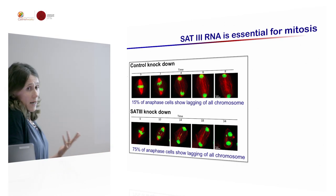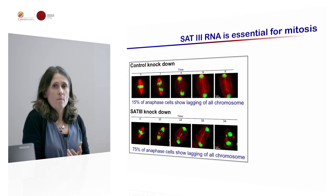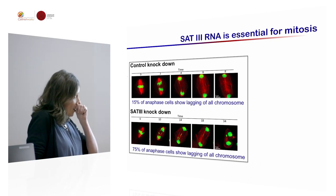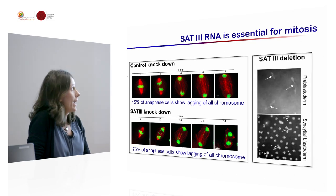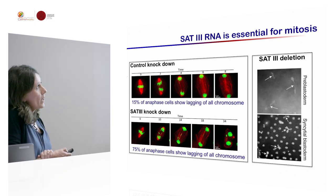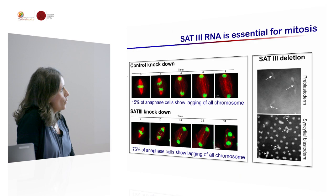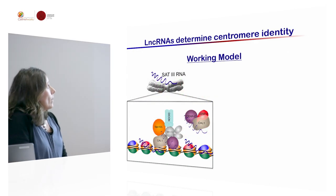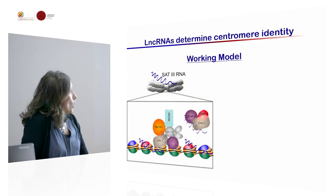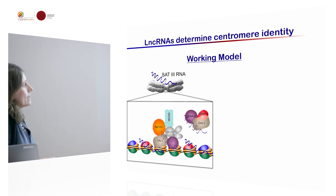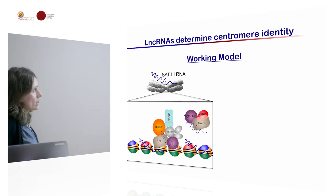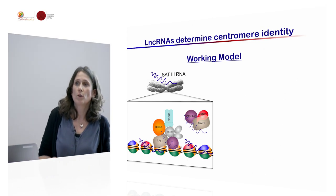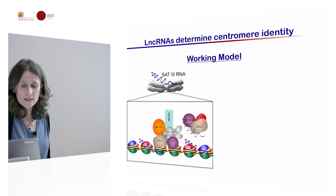If you deplete them by LNAs, for instance, you see massive chromosome segregation defects if those transcripts are not there anymore. That is also true if you have deletions in pre-blastoderm or syncytial embryos in Drosophila. We furthermore showed that those satellite 3 RNAs are required for the maintenance of centromeric chromatin, but also for the recruitment of CENP-A and the loading factor of kinetochore proteins.